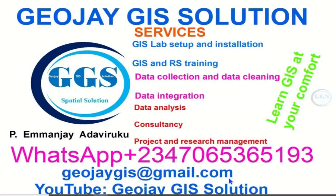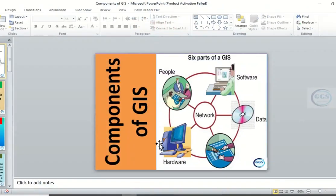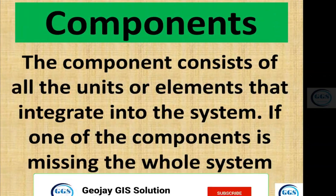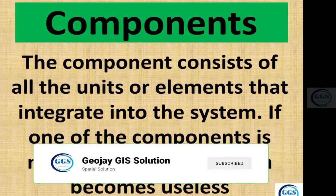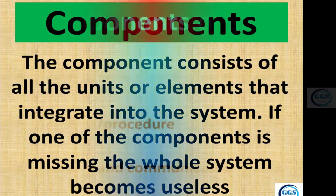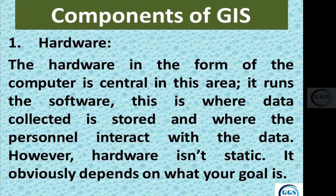Good day everyone and welcome to GeoJ GIS Solution Tutorial Channel. I am Emanjie Adaviruku. Today I want to take you through the components of GIS. The components consist of all the units or elements that integrate into the system — if one component is missing, the whole system becomes useless. The components of GIS consist of hardware, software, people, method or procedure, data, network and communication.